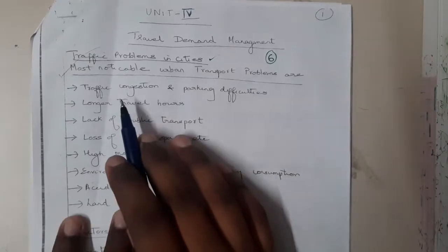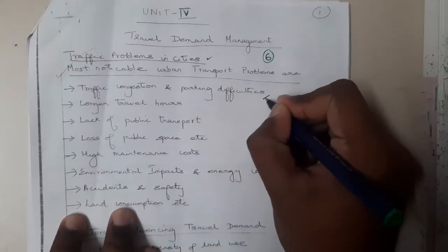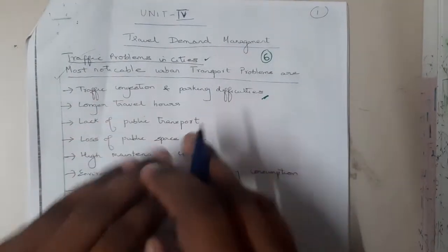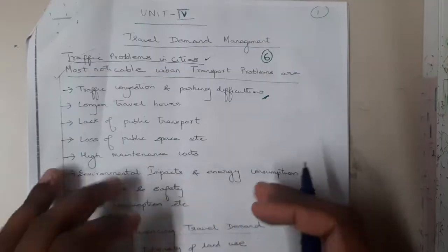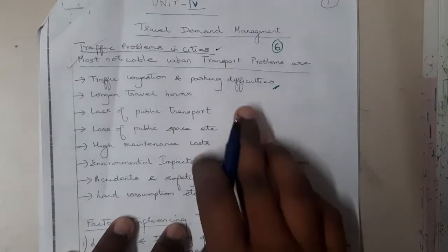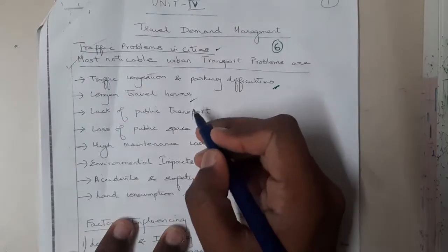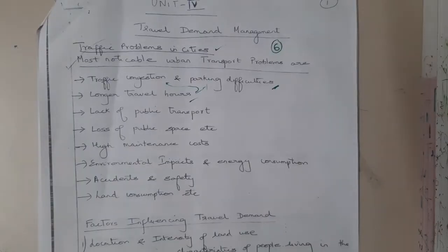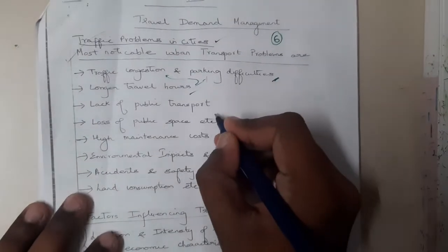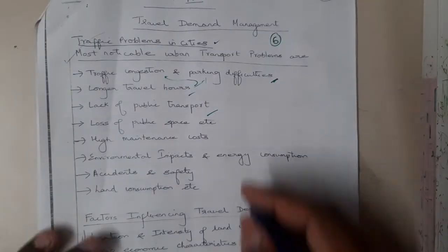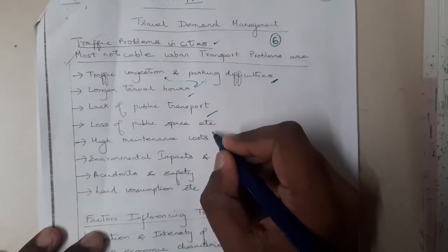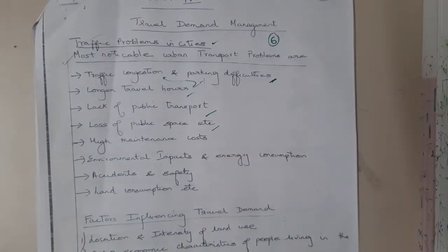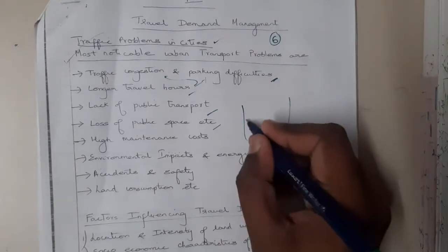Traffic congestion and parking difficulties — traffic congestion means the traffic jams, and parking difficulties means there is no proper place for us to park. Due to these traffic and parking reasons, your traveling journey takes a long time — longer traveling hours. Similarly, there is a lack of public transport and also a loss of public space.